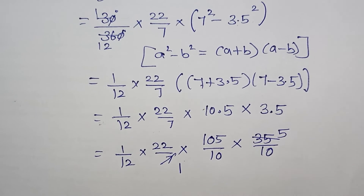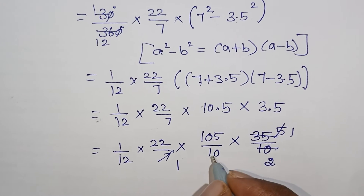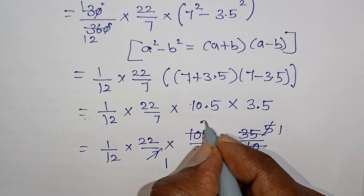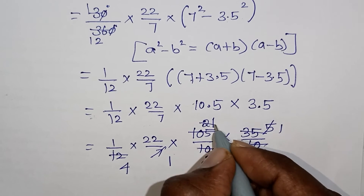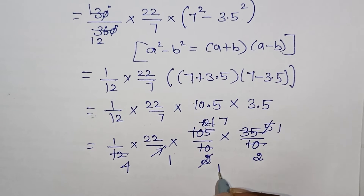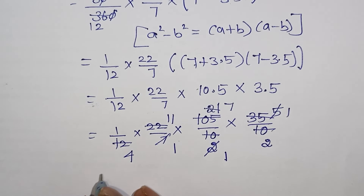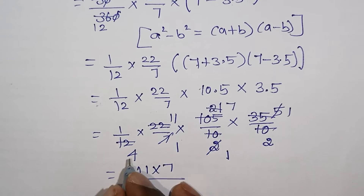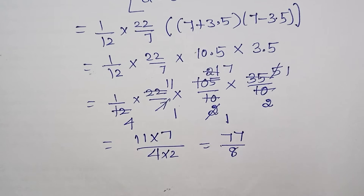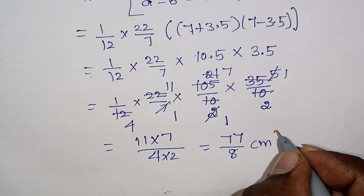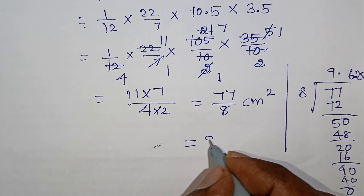Working through the arithmetic: 30 by 360 simplifies to 1 by 12. Then 1 by 12 multiplied by 22 by 7 multiplied by the product of (10.5 × 3.5). Cancelling common factors step by step through the multiplication gives us the numerical result.